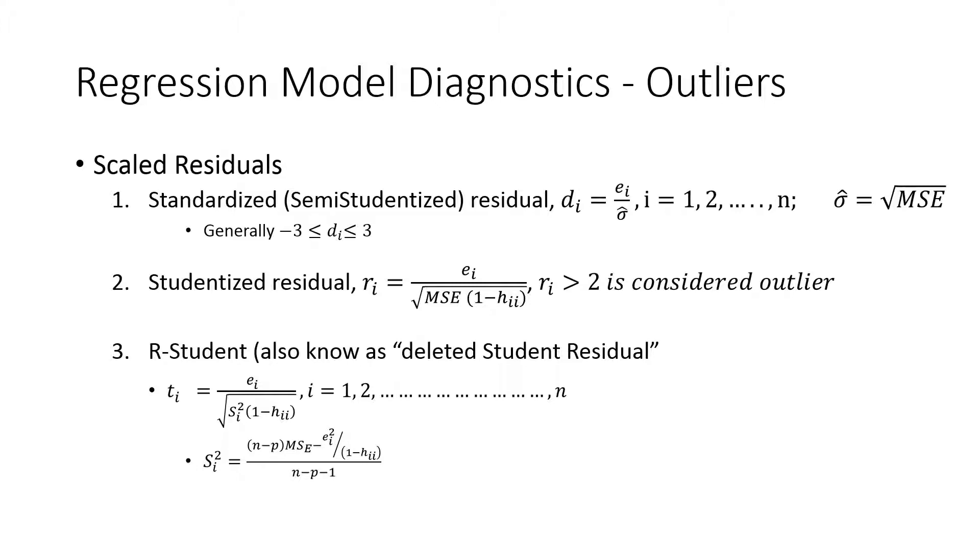Whether you use SAS, SPSS, Minitab, they all give you this value. Studentized residuals is basically an adjusted residual. Residual is ei which is adjusted by MSE and then one minus hat matrix. If this value is more than two, that is considered an outlying observation.